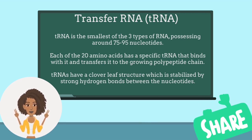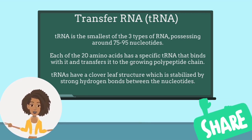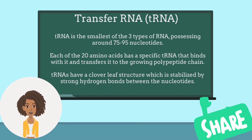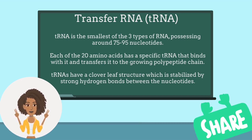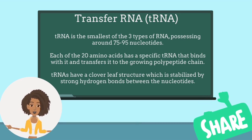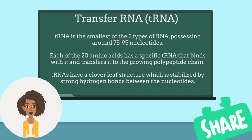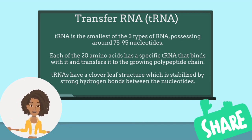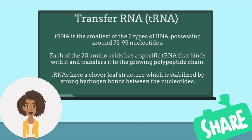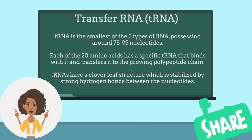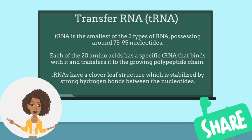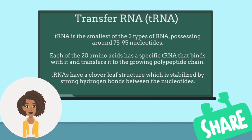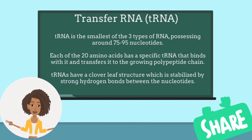tRNAs transfer amino acids to form a polypeptide chain. They also act as adaptors in translation to the genetic sequence of the mRNA during protein synthesis, and are therefore also called adaptor molecules. tRNAs have a cloverleaf structure which is stabilized by strong hydrogen bonds between the nucleotides. They normally contain some unusual bases in addition to the usual forms, which are formed by methylation of the usual bases.